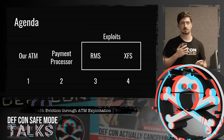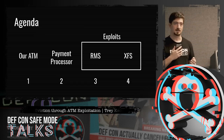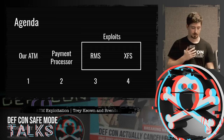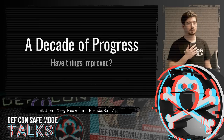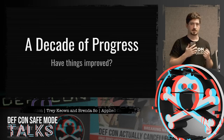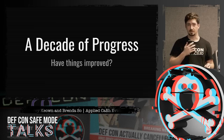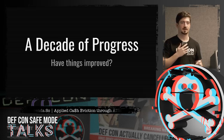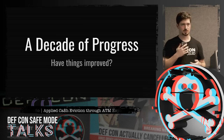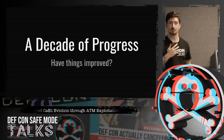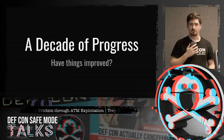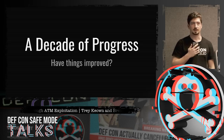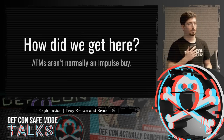The first vulnerability is in the remote management system on this device, and the second is in its implementation of the Extensions for Financial Services component, which we'll get into later. There's been a lot of talk about ATMs in the past — one of the more famous was Barnaby Jack's talk ten years ago, where he demonstrated jackpotting ATMs and installing rootkits. We wanted to see how things had improved over a decade.